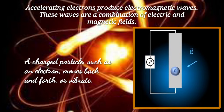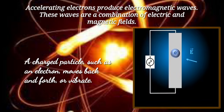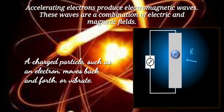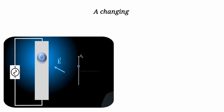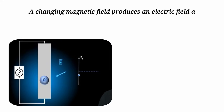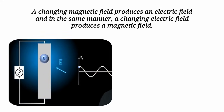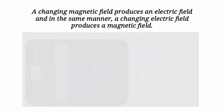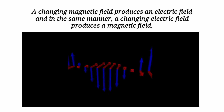A charged particle, such as an electron, moves back and forth or vibrates. A changing magnetic field produces an electric field, and in the same manner, a changing electric field produces a magnetic field. The blue arrow represents the magnetic field and the red arrow represents the electric field.